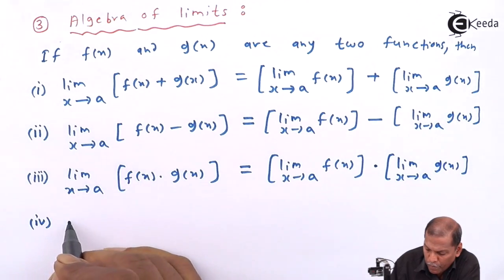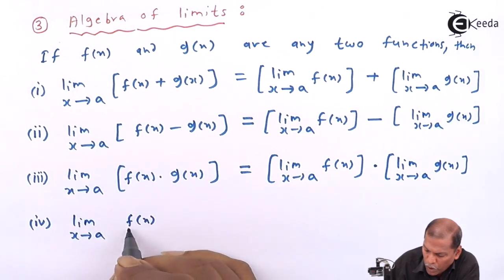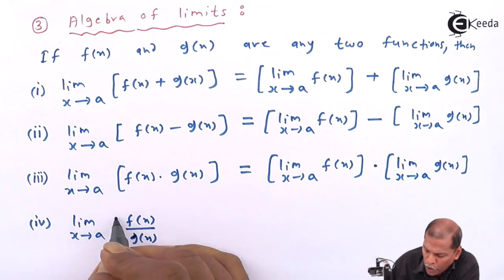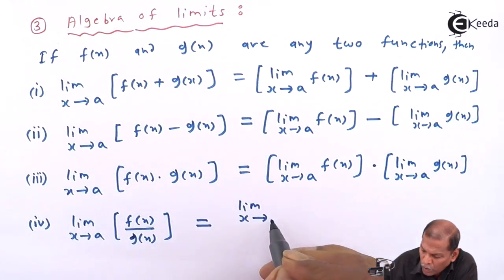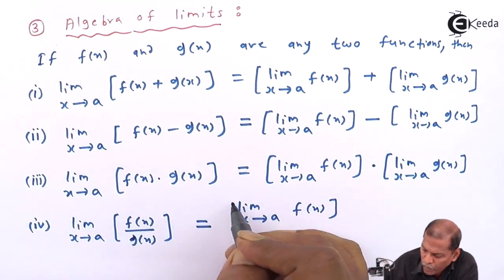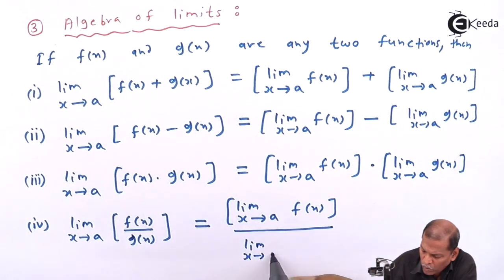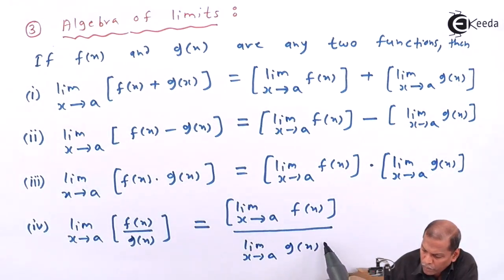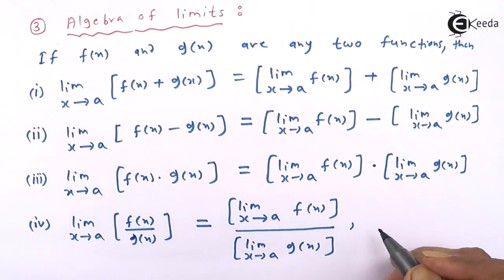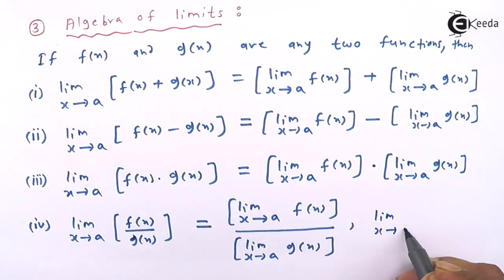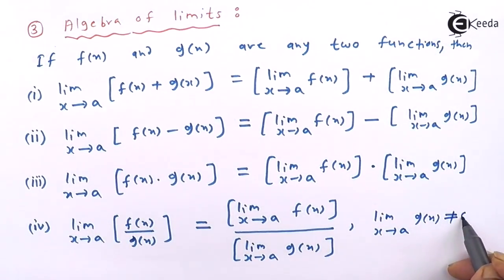Formula number four: limit x tends to a of [f(x) upon g(x)] is equal to limit x tends to a of f(x) upon limit x tends to a of g(x), provided the denominator, that is limit x tends to a of g(x), is not equal to zero.